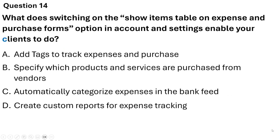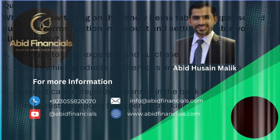Question 14. What does switching on Show Item Table on Expense and Purchase Forms in Accounts and Settings enable your clients to do? The correct answer is Option C — automatically categorize expenses in the bank feed.